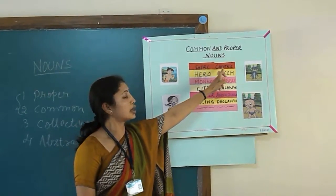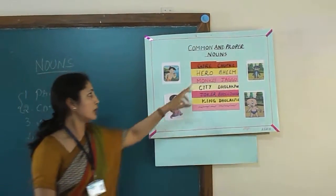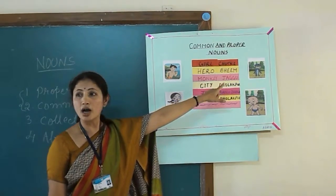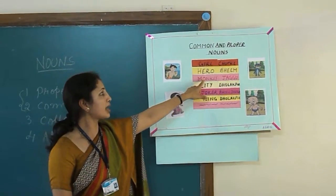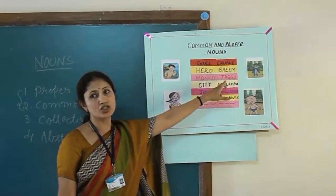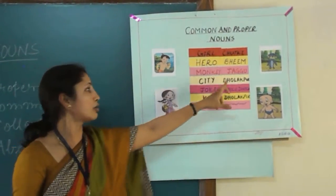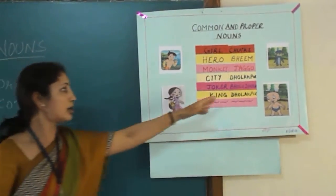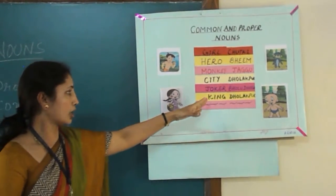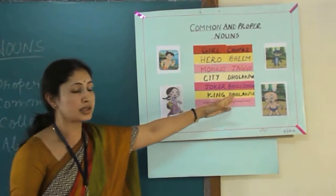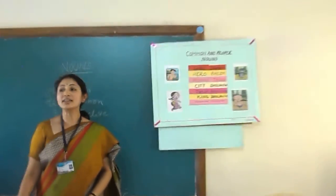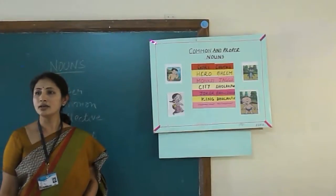If I say 'girl,' the name of the girl is Chutti — so it is a proper noun. The hero of this cartoon is Chota Bean, so 'Bean' is the proper noun. 'Monkey' is the common noun, whereas if I say 'Jaggu,' then it is the proper noun. 'City' is the common noun, whereas 'Dholakpur' is the proper noun. 'Joker' is the common noun, and the names of the jokers are Bolu and Dolu — they are proper nouns. 'King' is the common noun, whereas the name of the king is Indra Varma — so Indra Varma becomes the proper noun.